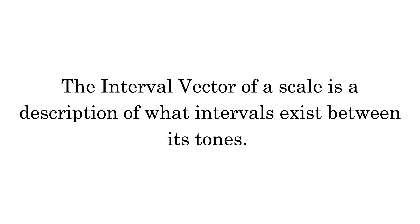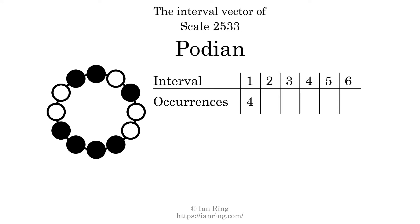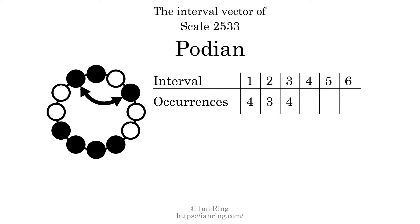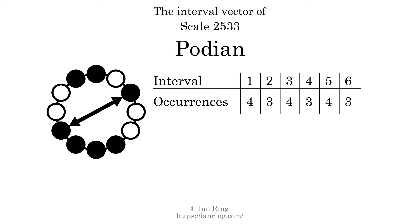The interval vector of a scale is a description of what intervals exist between its tones. There are 4 intervals with the size of 1 semitone, 3 intervals with the size of 2 semitones, 4 intervals with the size of 3 semitones, 3 intervals with the size of 4 semitones, 4 intervals with the size of 5 semitones, and 3 intervals with the size of 6 semitones.